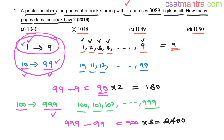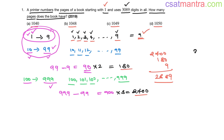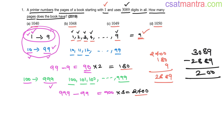Now let's add the digits counted so far: 2700 plus 180 plus 9 equals 2889 digits. But in total we have 3089 digits. So 3089 minus 2889 leaves 200 digits remaining.